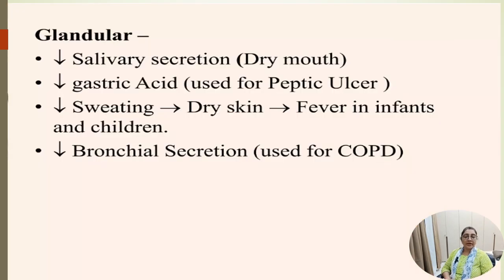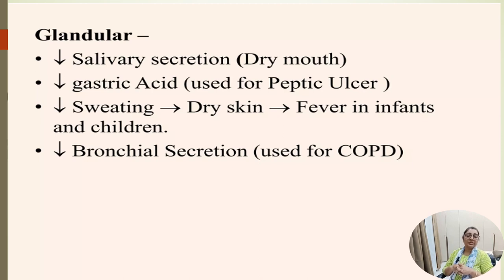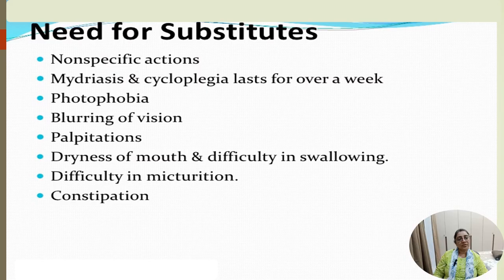On glands, anticholinergic drugs decrease salivary secretion in the mouth, decrease gastric secretion in peptic ulcer, and decrease sweating, leading to dry skin and fever in infants and children. They also decrease bronchial secretion, making them useful in COPD.